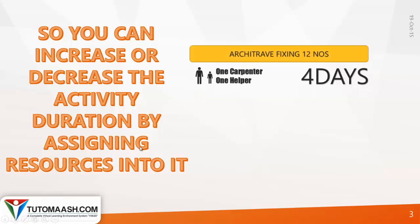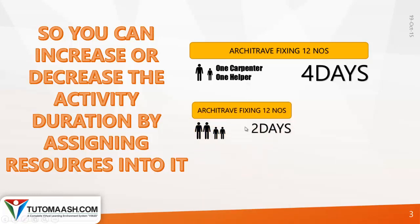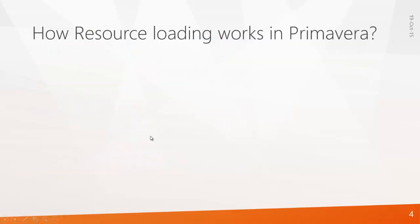For example, let's take an activity: fixing of 12 number of architraves. To do this activity within 4 days, you require 1 carpenter and 1 helper. This is how the productivity of resources depends upon the duration of activities.